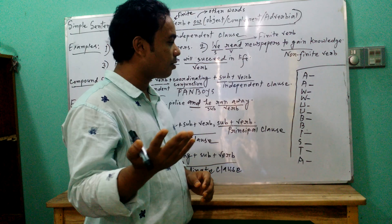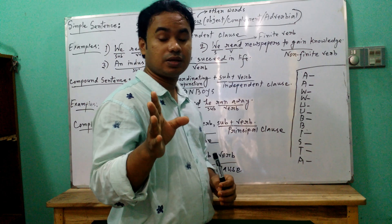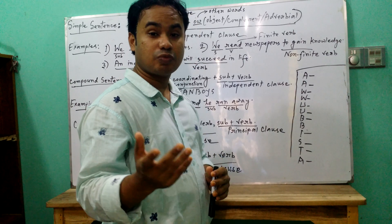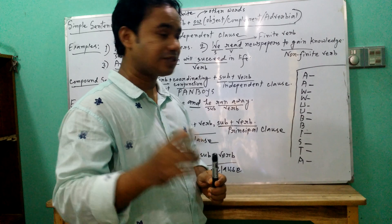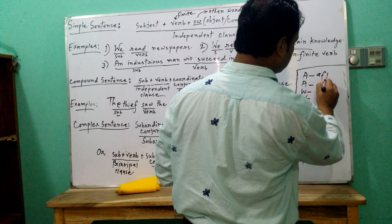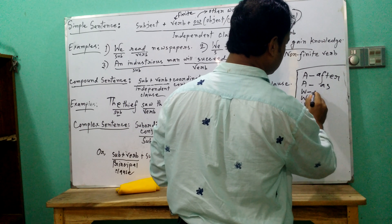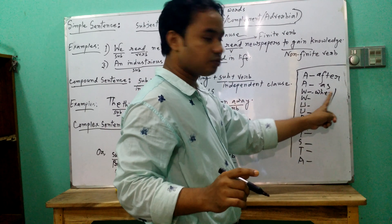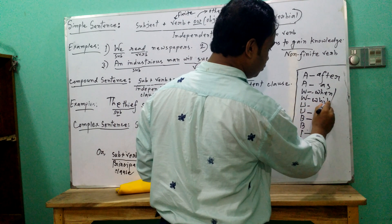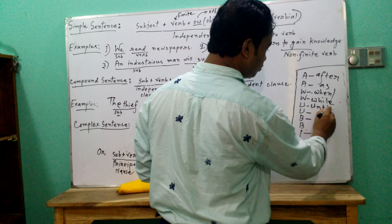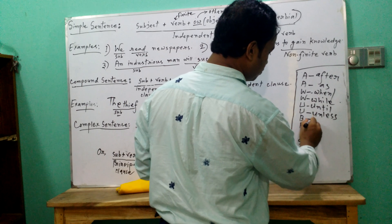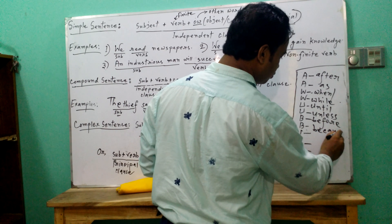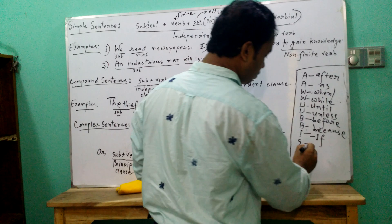There is a particular acronym to remember the subordinating conjunctions: IUVISTA. Remembering this acronym, you can recall some of the most commonly used subordinating conjunctions. For example: after, as, when, whenever. Then: until, unless, before, because, if, since, though.